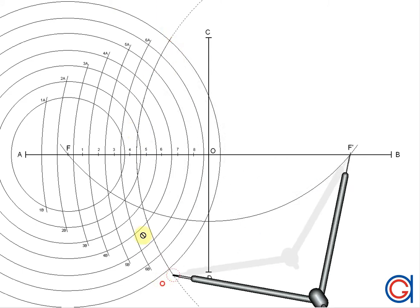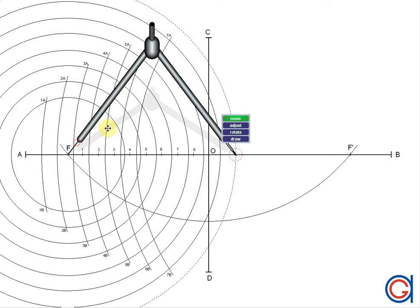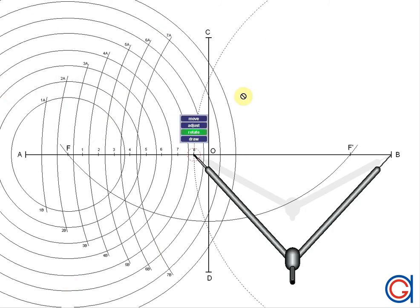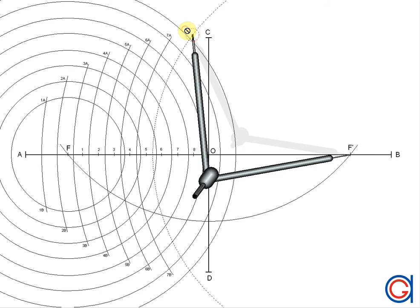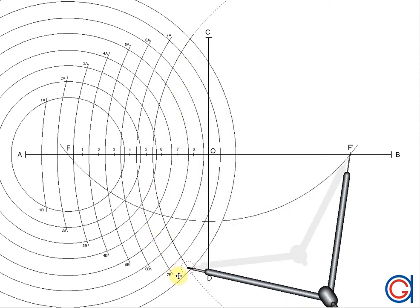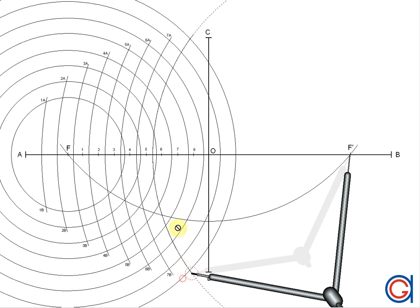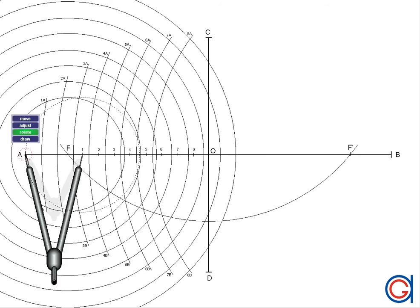Now we are going to locate the points for the right side of the ellipse by following the same procedure, using the same radii but switching our center focal point F to F'. So now, our small radii will be centered on F' and our large radii will also be centered on F'.